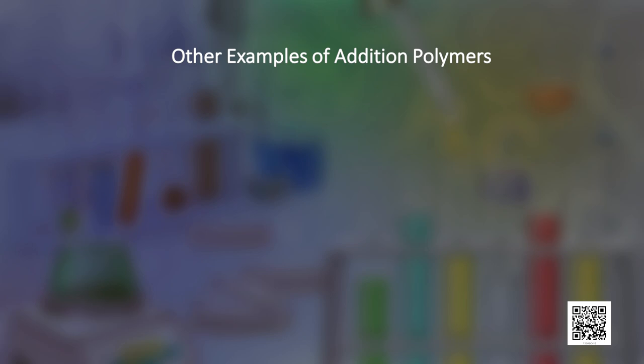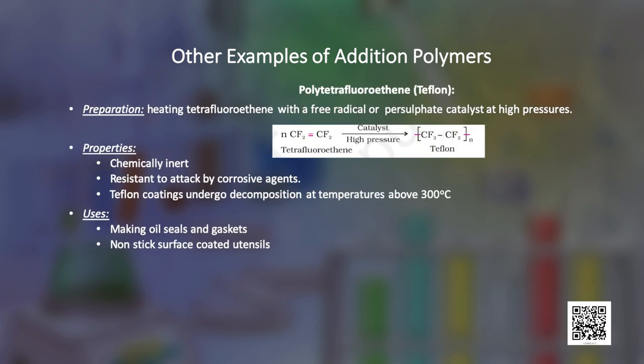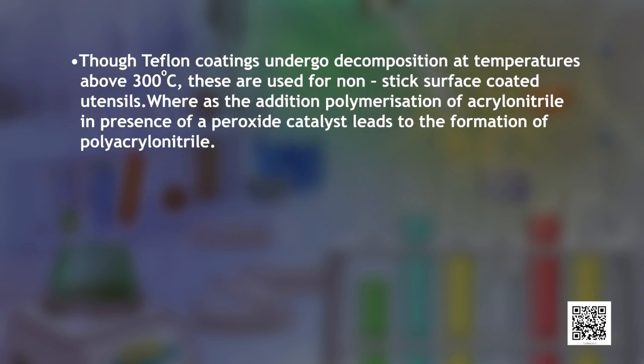Another common addition polymer is teflon, which is polytetrafluoroethene. It is manufactured by heating tetrafluoroethene with a free radical or persulfate catalyst at high pressures. It is chemically inert and resistant to attack by corrosive reagents, and therefore finds its use in making oil seals and gaskets. Though teflon coatings undergo decomposition at temperatures above 300 degrees centigrade, they are quite frequently used for nonstick surface coated utensils.